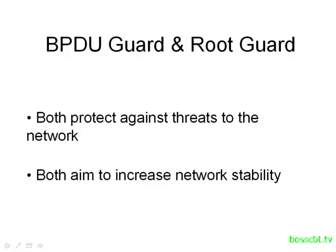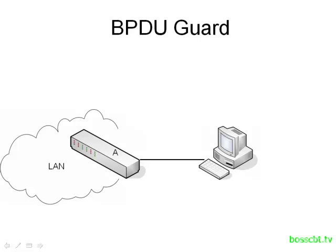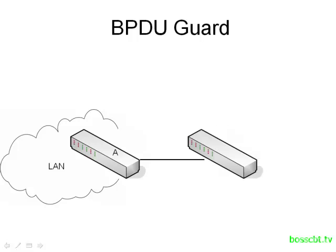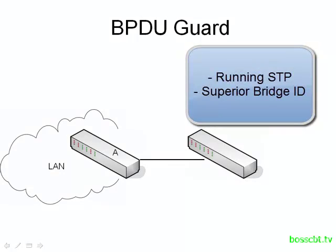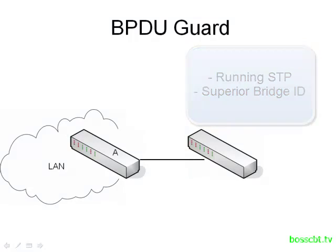We'll start off with BPDU Guard. Let's say we have a user connected to an access switch on our local area network. However, instead of connecting a PC, the user connects a different switch — perhaps they need to increase the number of ports in their room. So they just plug a switch in. If this switch is running Spanning Tree and it has a lower Bridge ID than the current root bridge on our local area network, then Spanning Tree is going to go ahead and enter the root bridge election process.